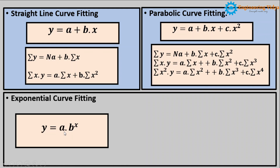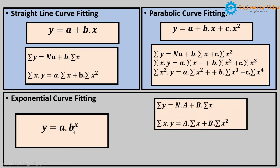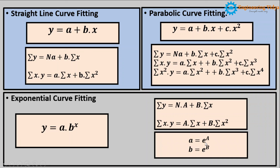The last type is exponential curve fitting. The general equation of exponential curve is y equal to a into e raised to bx, where the values of a and b can be evaluated using two equations. Always remember that here we use small a and small b, but in the equations we use capital A and capital B. This equation is very similar to the straight line equation — the only difference is that at the place of small a we write capital A, where small a is equal to e raised to capital A, and small b is equal to capital B. You can understand exponential curve fitting in detail when we solve problems.